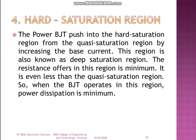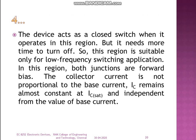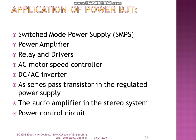In the hard saturation region, the power BJT is pushed from the quasi-saturation region by increasing the base current. This region is also known as the deep saturation region. The resistance offered in this region is minimum, and the BJT has very low power dissipation. When in hard saturation, the BJT acts as a closed switch and is used in low-frequency applications. Applications of power BJT include SMPS, power amplifiers, and relays.